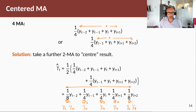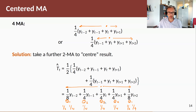The trend estimate at time T will be one-quarter of Yt, one-quarter of Yt minus 1, and one-quarter of Yt plus 1, but then one-eighth of two observations away from T. So if this is quarter 3, then the trend-cycle estimate for that quarter will be an average across Q2 and Q4, but also half of Q1 from the same year and half of Q1 from the next year.